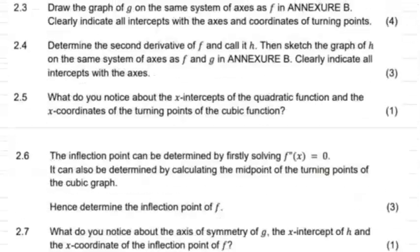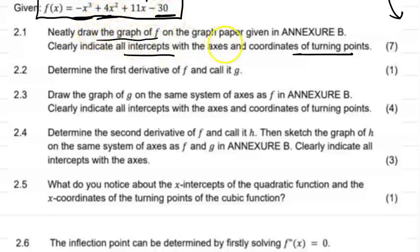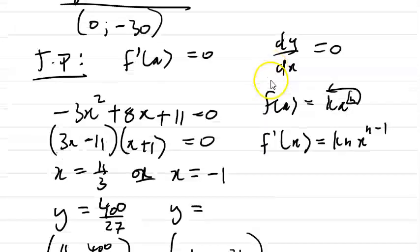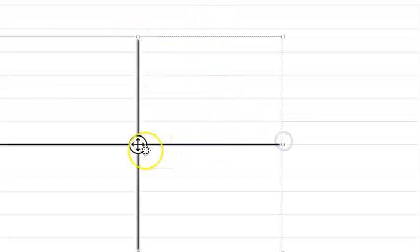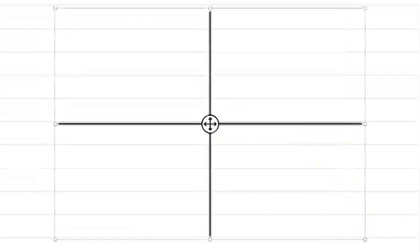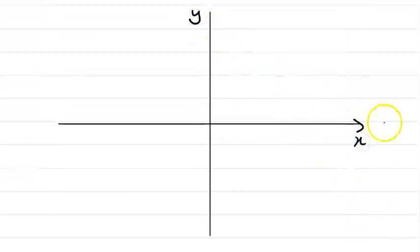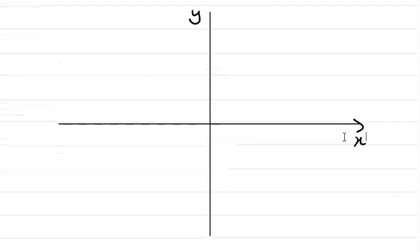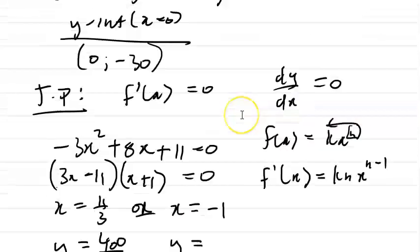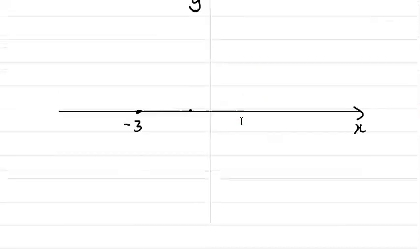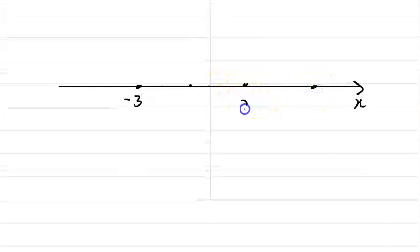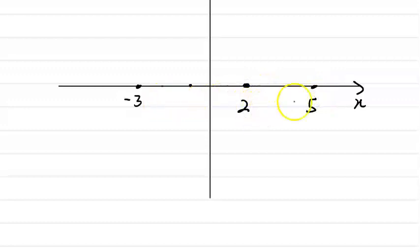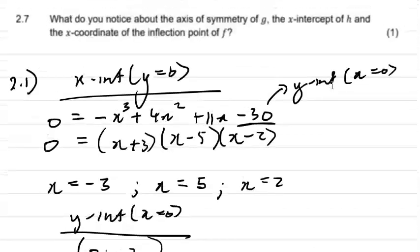Now we can draw the graph. Set up your axes. The x-intercepts are at -3, 2, and 5. Since this is a decreasing cubic function, it starts high and goes down. Plot your turning points: (11/3, 400/27) ≈ (3.7, 14.8) is the maximum, and (-1, -36) is the minimum.